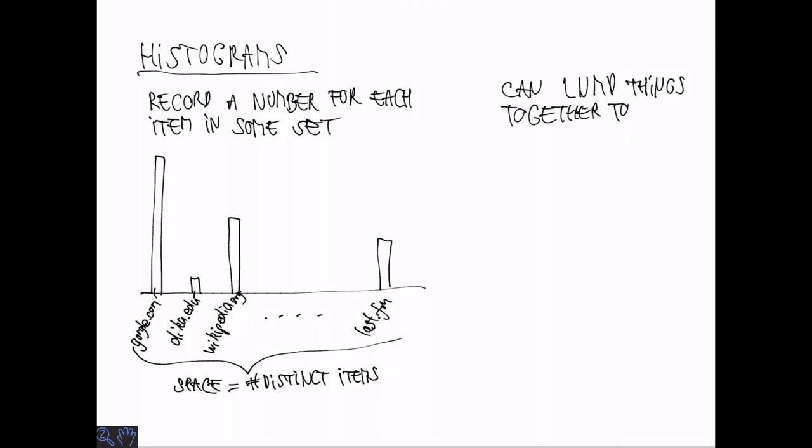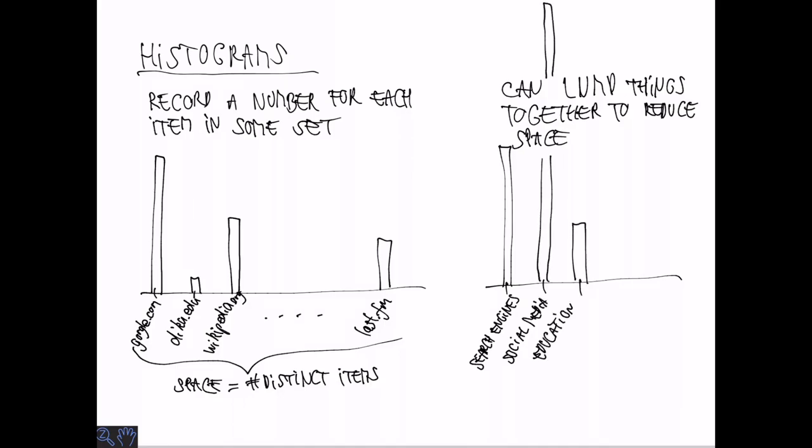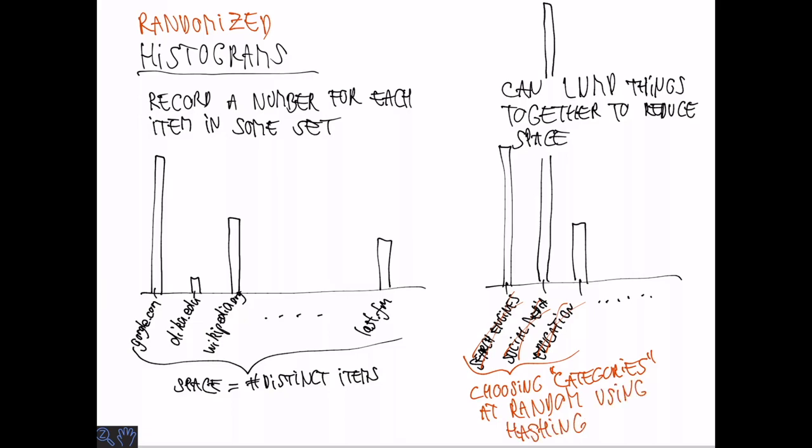But what we can do and which is actually often done just to reduce the space for such a histogram is to lump things together. So here you could lump search engines together, social media, education and so on. And you're going to get a much smaller histogram that gives you at least some information that's relevant. But the question is how to choose the categories. What we're going to discuss next can be seen as a randomized way of choosing the categories.